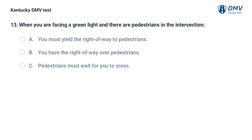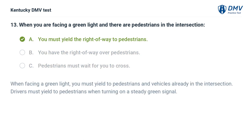When you are facing a green light and there are pedestrians in the intersection: A. You must yield the right of way to pedestrians. B. You have the right of way over pedestrians. C. Pedestrians must wait for you to cross. The correct answer is A, you must yield the right of way to pedestrians. When facing a green light, you must yield to pedestrians and vehicles already in the intersection. Drivers must yield to pedestrians when turning on a steady green signal.